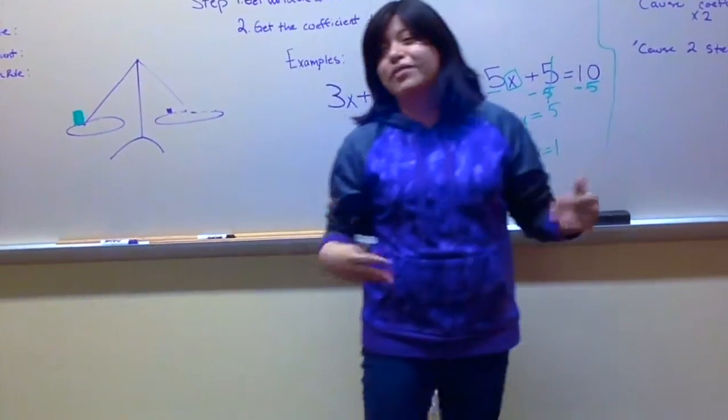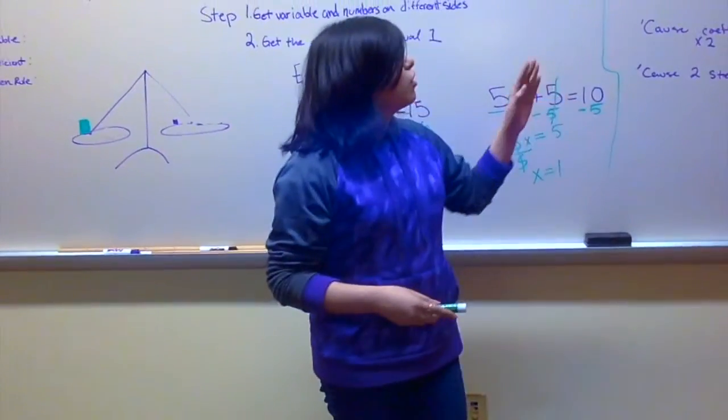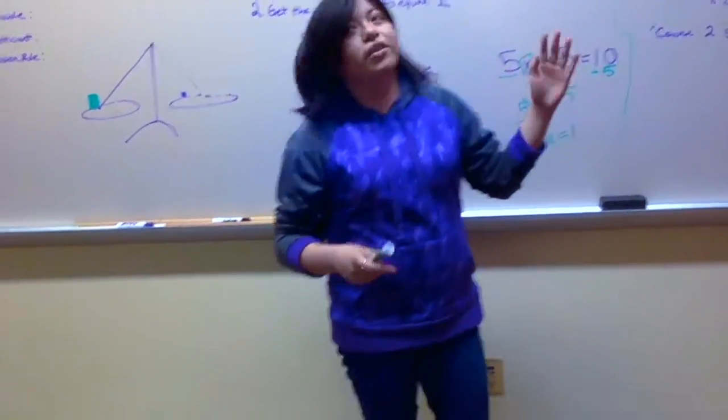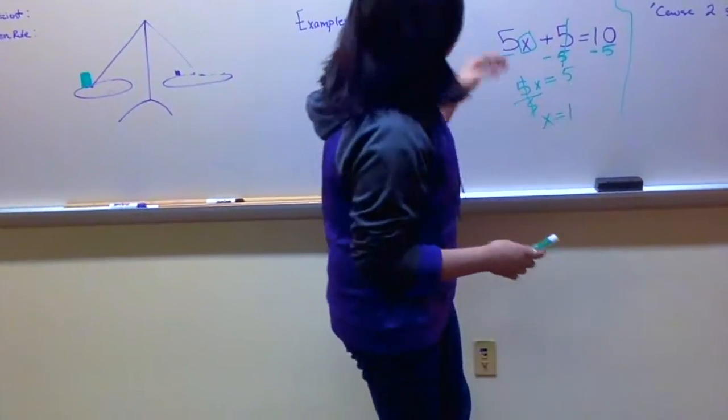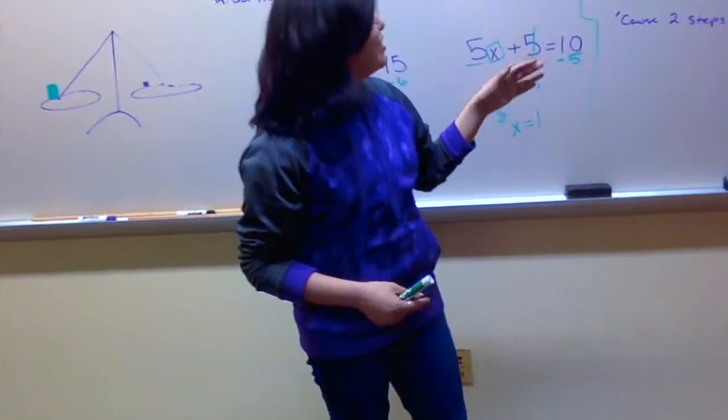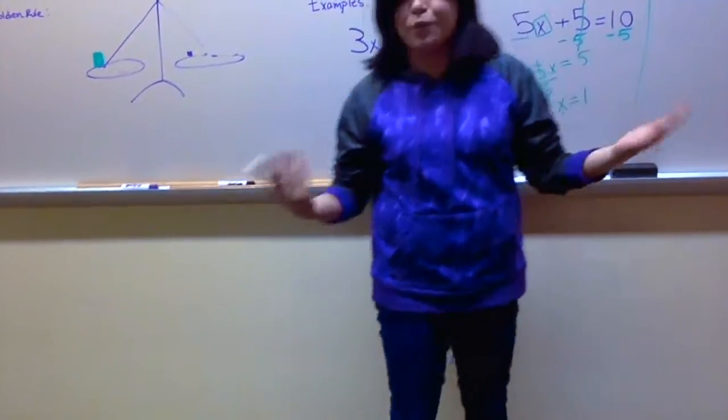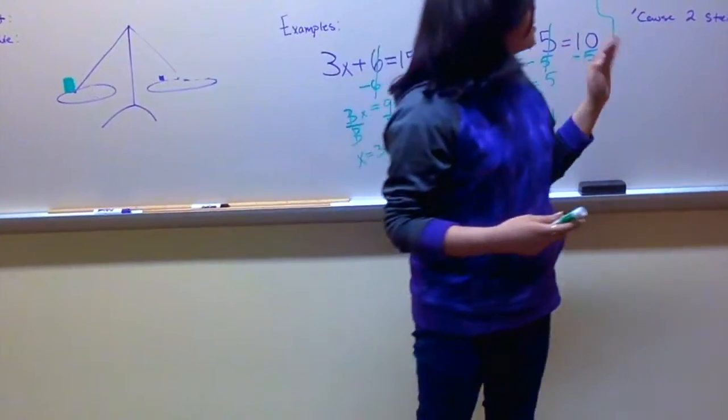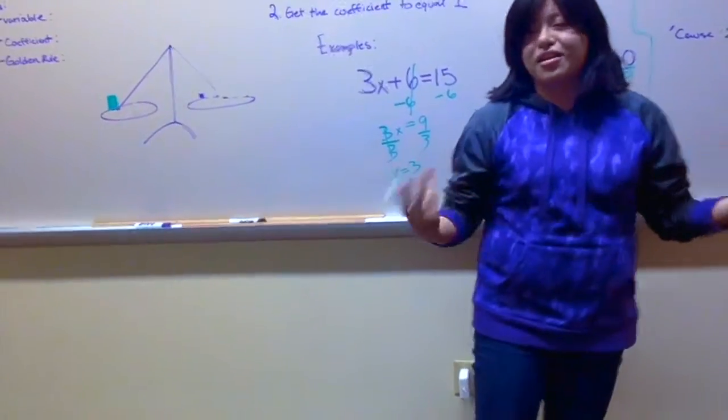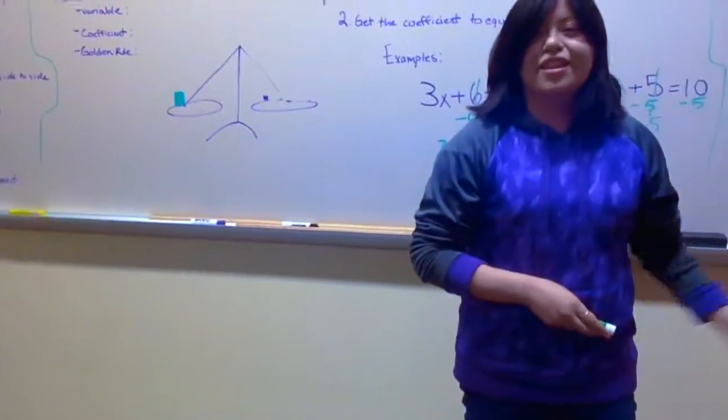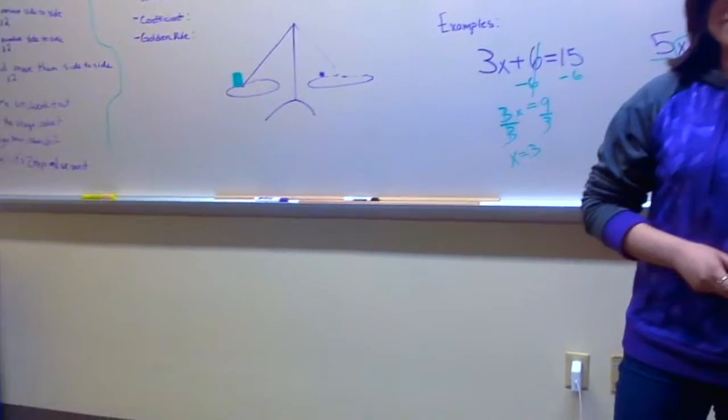Come on. Don't believe us? Just watch. Variables go on one side. Numbers go on the other side. Because the coefficient is going to equal one. Because the coefficient is going to equal one. So, it's two steps going to solve for it. And that's the cheer. So, let's do it together. Aye. Thank you.